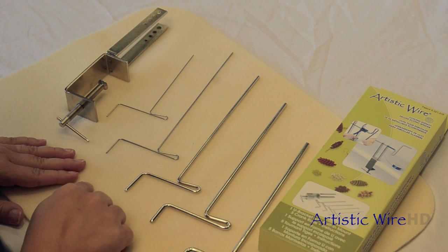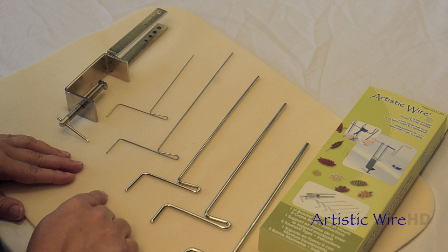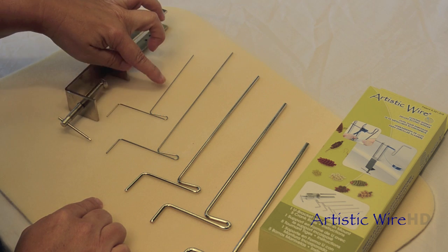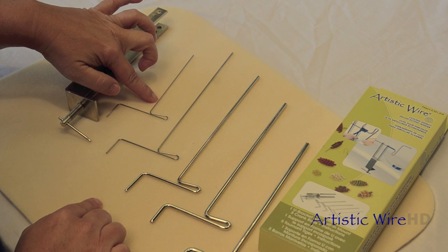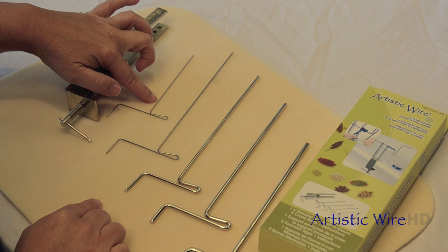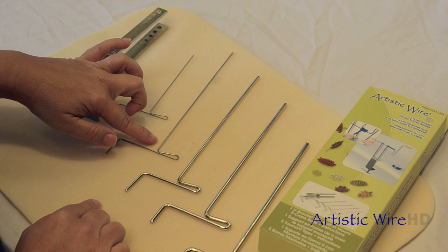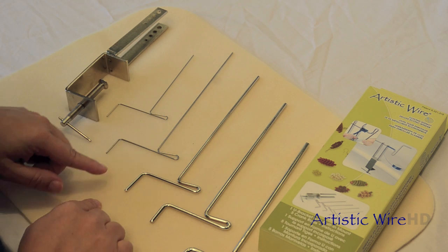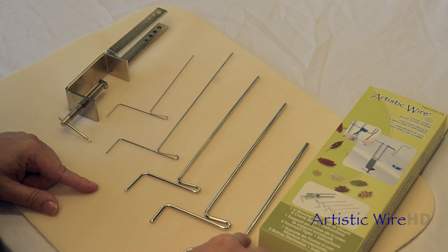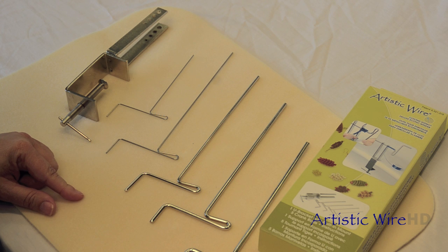You're also going to get five crank rods and you can see that there is a really tiny one right here. This makes some really cool small coils and really beautiful tiny little wire beads. And then you have the next size all the way up to this really thick rod, which is really cool for making jump rings.